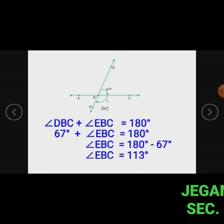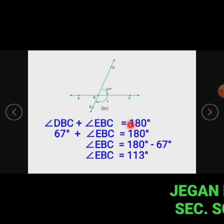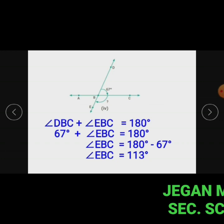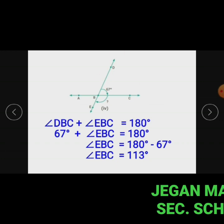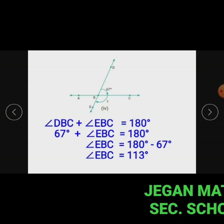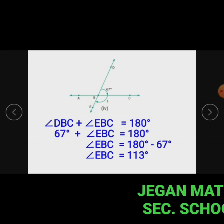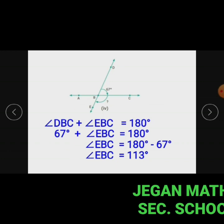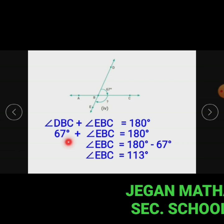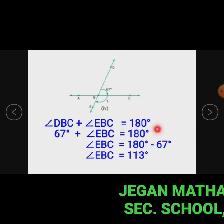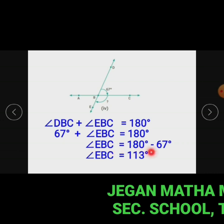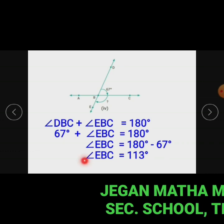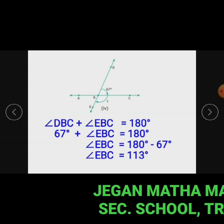In this figure, angle DBE equals 90 degrees. Angle DBE is divided into angle DBC and angle EBC. Here angle DBC equals 67 degrees. So angle DBC plus angle EBC equals 90 degrees. Therefore angle EBC equals 90 minus 67 degrees, giving angle EBC equal to 23 degrees.